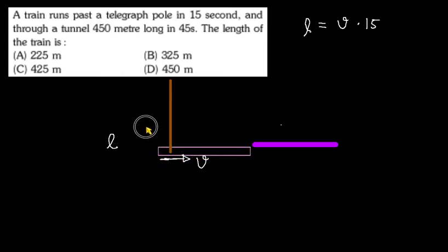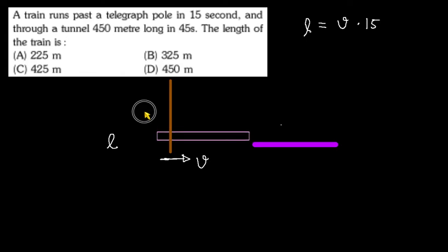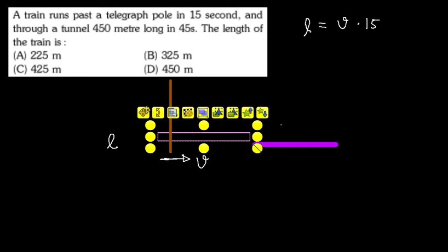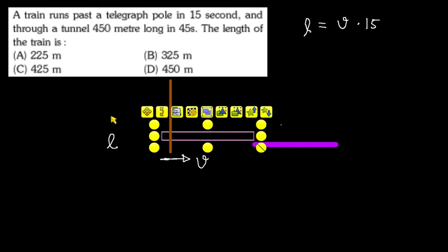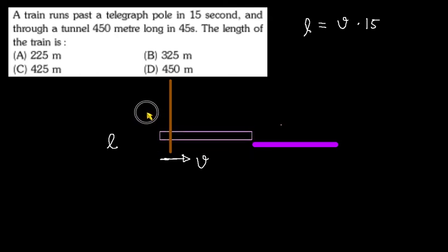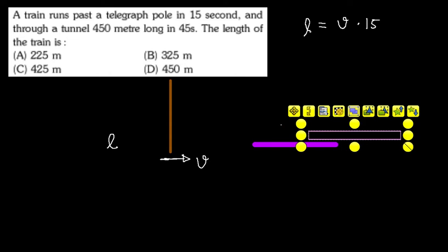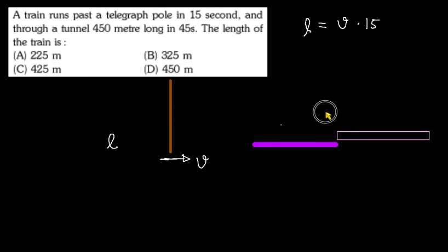How much distance will the front cover? What does it mean to cross the tunnel? Leave the back part, consider only the front part — this is the front part. If it crosses the tunnel, the front part will enter the tunnel and exit on the other side. What does it mean to cross the tunnel? That it is completely out of the tunnel. So the distance is 450 plus L — yes, 450 plus L. That's why it was a practical question.